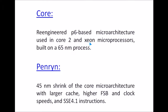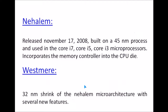Core was a re-engineered P6-based microarchitecture used in Core 2 and Xeon microprocessors, built on a 65 nanometer process. Then came Penryn, a 45 nanometer shrink of the Core microarchitecture, with a larger cache, higher FSB (front side bus), higher clock speeds, and SSE 4.1 instructions.